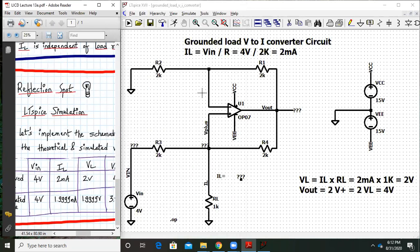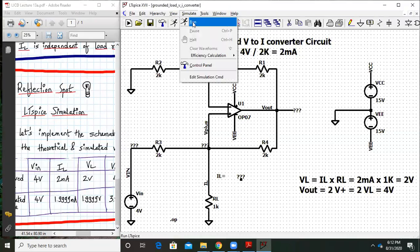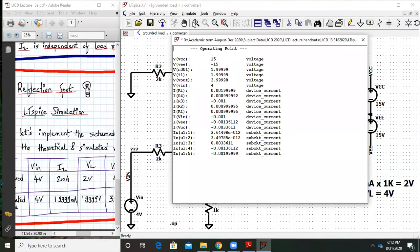This is my grounded load V to I converter. I have my resistors. This is my R, this is my R, which is 2K. All the other resistors are also 2K and RL is around 1K. Let us simulate it and let's see what do we have over here.